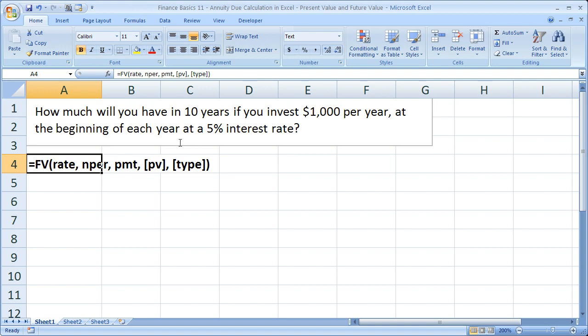The only thing we need to change is the type argument at the back of the function. So this is the future value function, and we're going to use that right now to solve this problem right here.